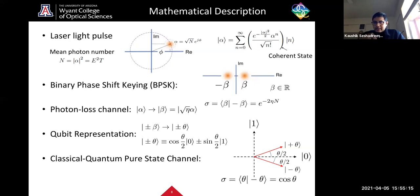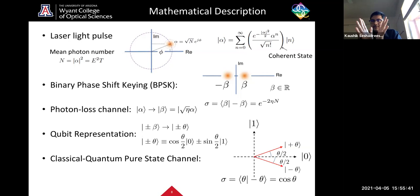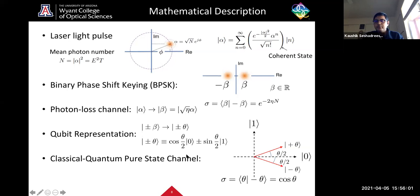It becomes convenient to represent the BPSK coherent states as qubit states. Even though coherent states are pure state vectors living in infinite-dimensional Hilbert space of a single electromagnetic mode, since we are dealing with just two states and the problem is discriminating two states, we are essentially working in a two-dimensional subspace. The key constraint is that the overlap between the two qubit states must be preserved — if you start with overlap e^{-2 eta n}, that has to be preserved as the overlap between the two qubit states.